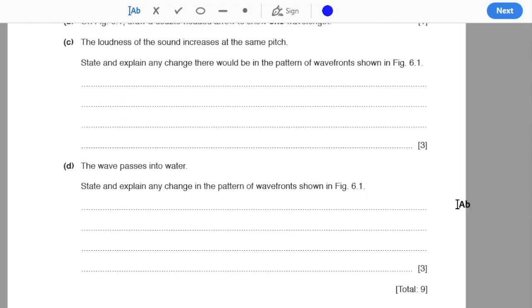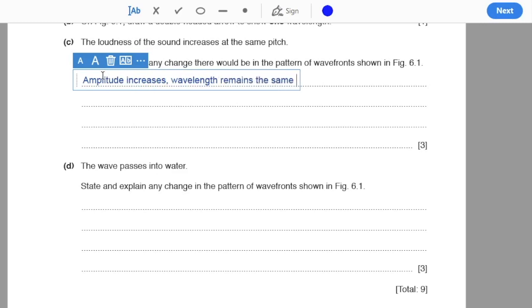Part c: the loudness of the sound increases at the same pitch. State and explain any change there would be in pattern of wavefronts shown in figure 6.1. Loudness is linked to amplitude and pitch is linked to frequency. With increasing loudness we expect amplitude to increase with no change in wavelength. So amplitude increases, wavelength remains the same. As far as pattern of wavefronts is concerned, wavefronts will now get closer at compressions and farther at rarefactions.